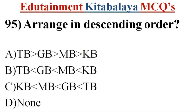Question number 95. Arrange in descending order? A. TB GB MB KB. B. TB GB MB KB. C. KB MB GB TB. D. None. Correct answer is A. TB GB MB KB.